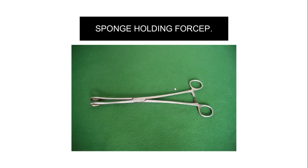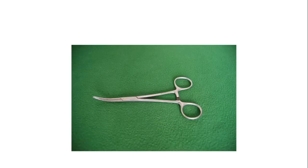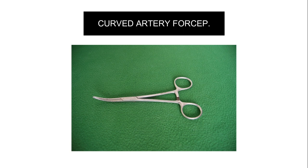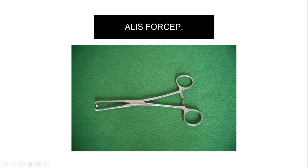This is the sponge-holding forceps, used to hold the sponge. This is the curved artery forceps — as you can appreciate, there are straight striations visible here. This is the Ellis forceps — you can see the cup shape at the tip.